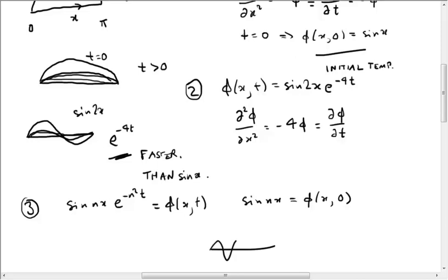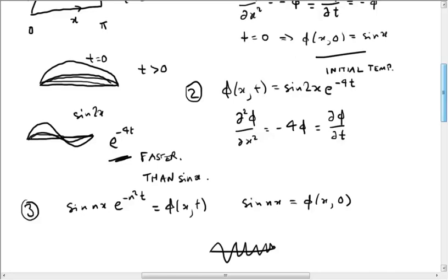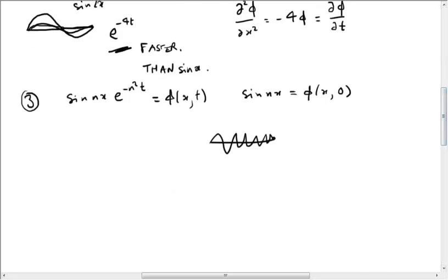So the graph of this will be some wiggly thing. It's supposed to look a bit more uniform than that, but let me actually draw that again. It's really bad. It's okay, that's when n is 4. Forget this. And this will decay like e to the minus n squared t. In our case, minus 16t.